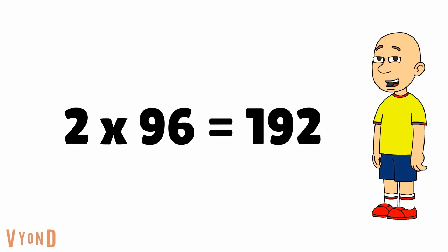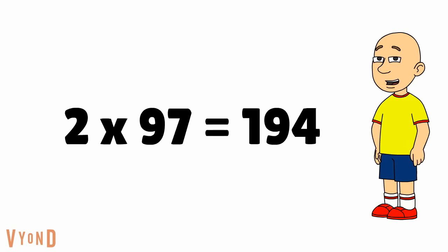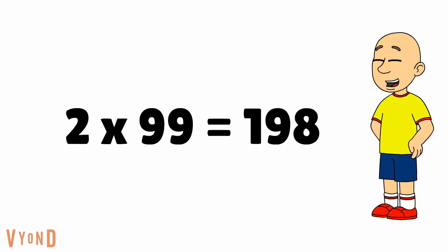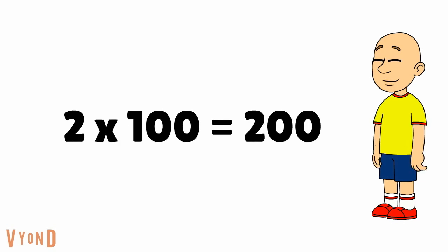2 times 96 equals 192. 2 times 97 equals 194. 2 times 98 equals 196. 2 times 99 equals 198. And finally, 2 times 100 equals 200.